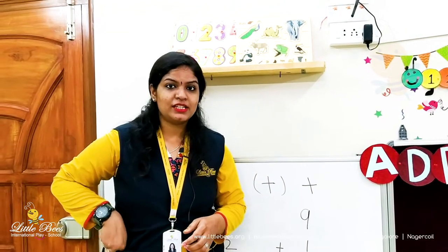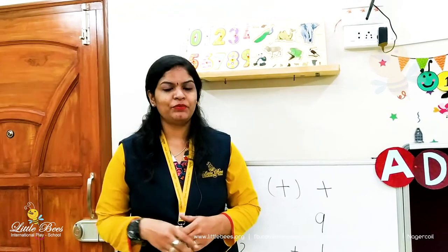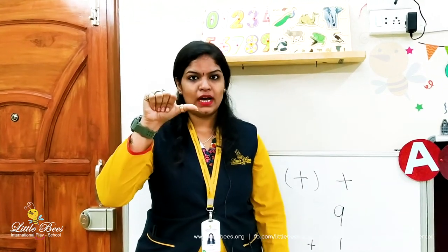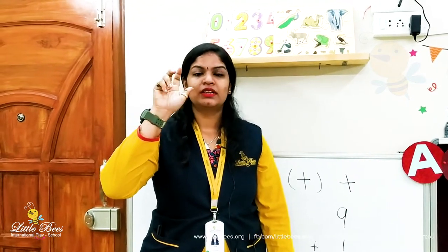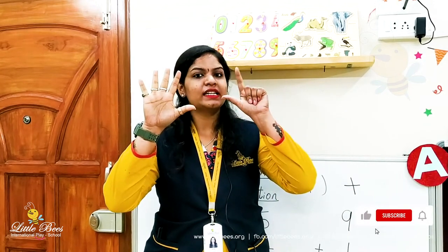First we will learn how to count numbers using our fingers. We have 10 fingers. We always start with number one at the thumb finger. Let's count together: one, two, three, four, five, six, seven, eight, nine, ten. We always start counting from our thumb finger — thumb finger is number one.